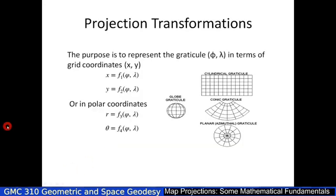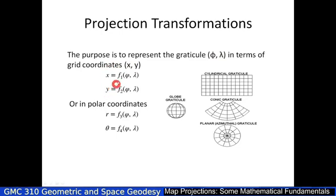The purpose of Map Projections transformations is to present the graticule — Lambda and Phi — in terms of grid coordinates X and Y. So both X and Y will be functions of Lambda and Phi, or of polar coordinates, though we don't work much with polar coordinates at the moment.